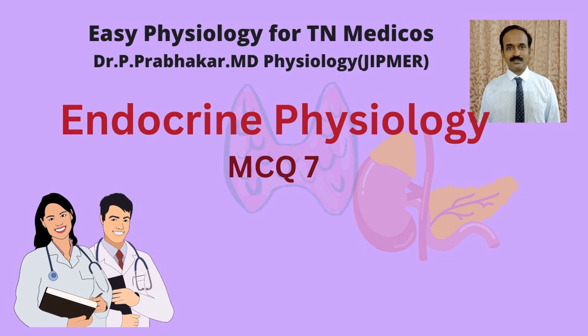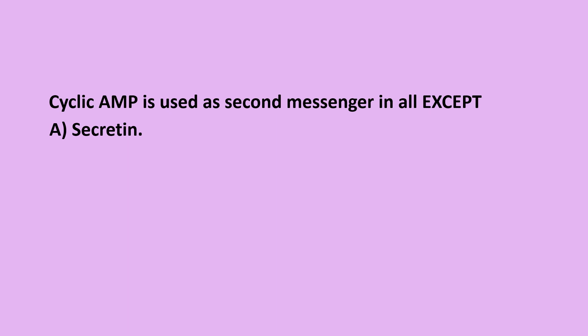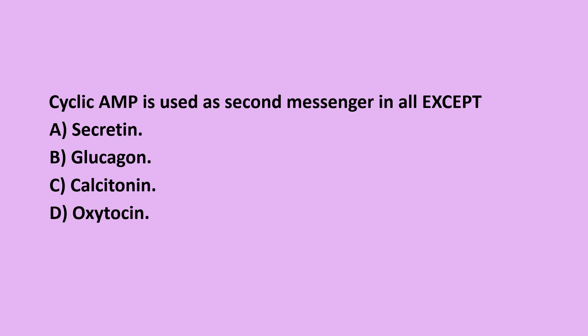Welcome, good morning. This MCQ was asked in the Tamil Nadu Dr. MGR Medical University physiology question paper. The question is: cyclic AMP is used as the second messenger in all except — option A: Secretin, option B: Glucagon, option C: Calcitonin, option D: Oxytocin.